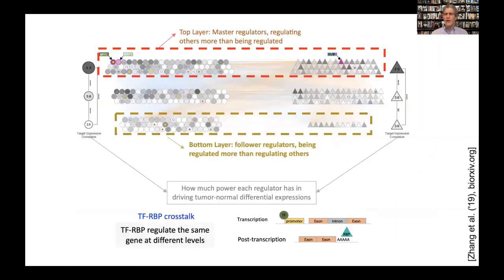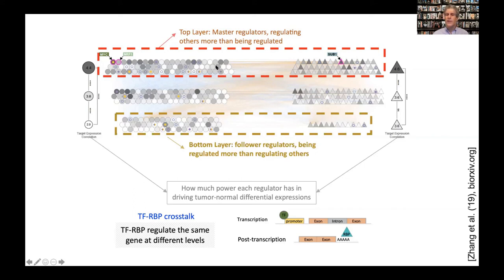Putting the RNA binding proteins and the TFs together, we can build a regulatory hierarchy just as we showed for TFs alone. Things at the top of the hierarchy — both RNA binding proteins and TFs — tend to drive gene expression the most. There is a lot of crosstalk between the TF and RNA networks, and we highlight MYC and SUB1 as acting together on the same genes, promoting transcription and post-transcriptional regulation respectively.